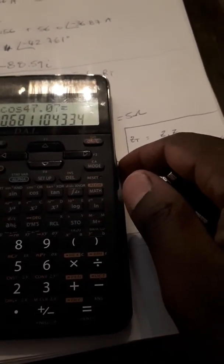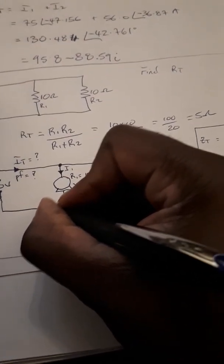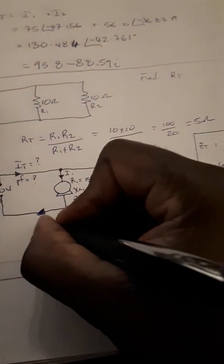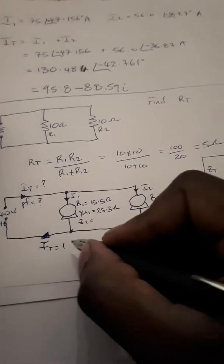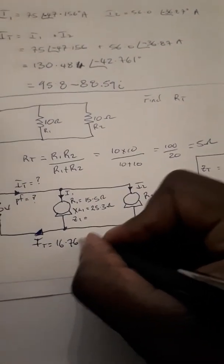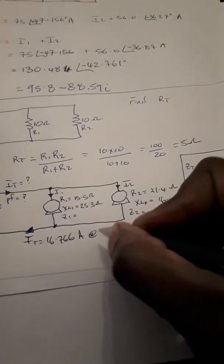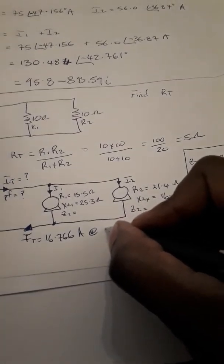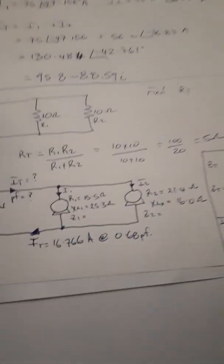And from that you can just find the power factor pretty easily, just say cosine of 47.07 and your power factor is 0.681. So IT is 16.766 amperes at 0.68 power factor lagging. Simple.